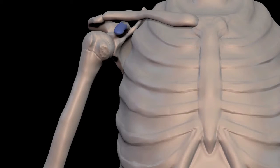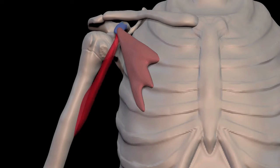Here in blue is the coracoid process. We've already seen that the pectoralis minor attaches to it. Here is the coracobrachialis.